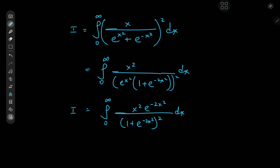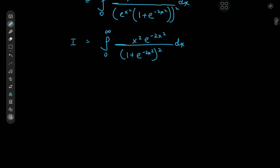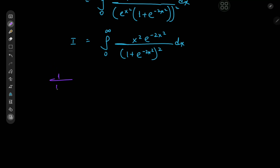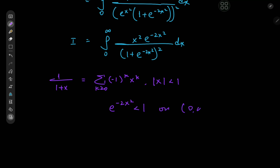What we can invoke now is the geometric series, because we know that 1 by 1 plus x can be expanded as the sum over the non-negative integers k of negative 1 to the k times x to the k, provided that the absolute value of x is less than 1. And this is of course valid for e to the negative 2x squared, which is less than 1 on the interval 0 to infinity.